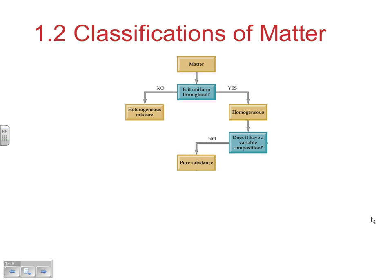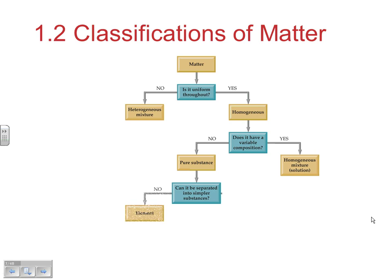If the composition is uniform throughout, that's a pure substance. If it varies, we have a homogeneous mixture — also called a solution. Within pure substances, we divide into two subcategories based on whether it can be separated into simpler substances chemically. If it can't, it's elemental; if it can, it's a compound.